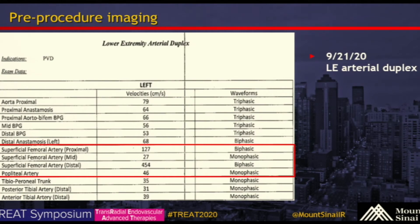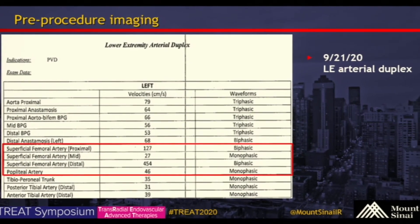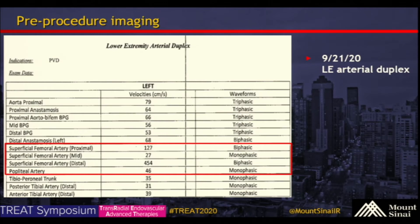The patient presented to clinic last month with persistent left lower extremity claudication, and a duplex was performed of the left lower extremity. There's at least doubling of the velocities in the SFA with blunting and resistive velocities indicating hemodynamically significant stenosis in the SFA, particularly around the region of Hunter's Canal.